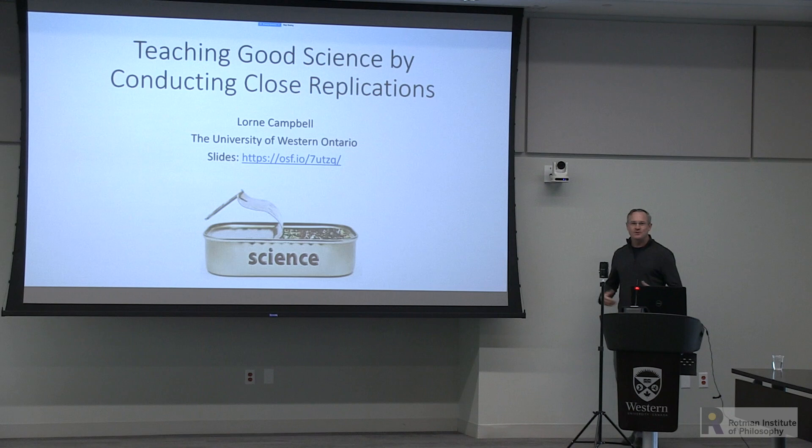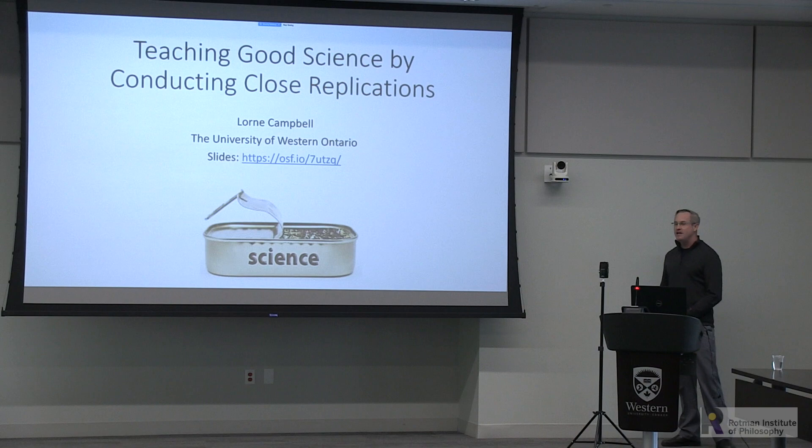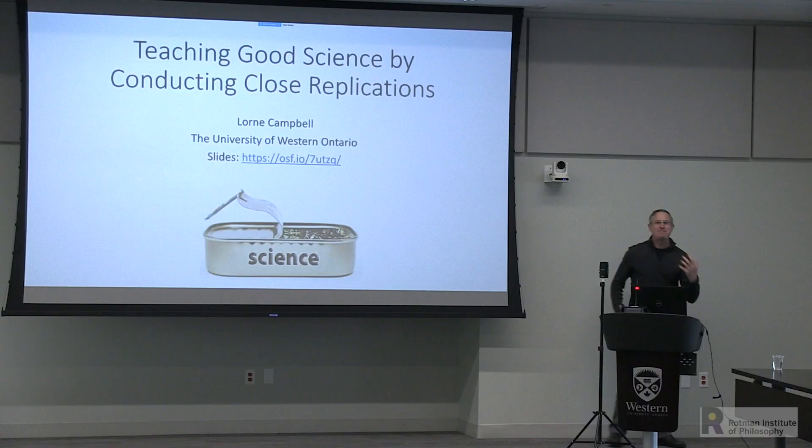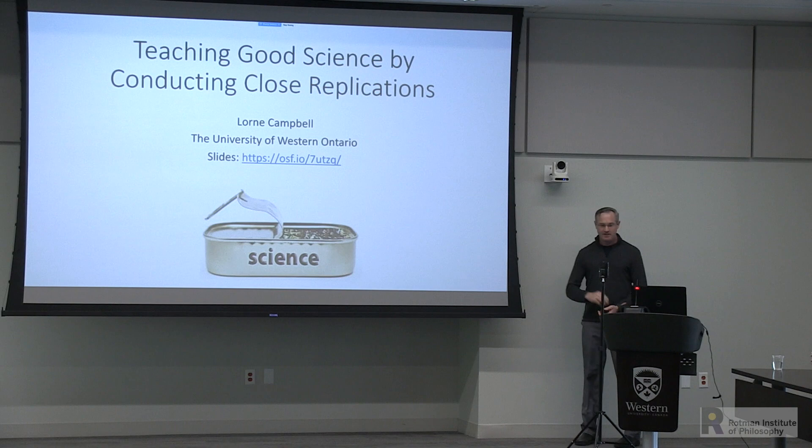As a fun anecdote: I'm a social psychologist studying relationship processes, and when I talk to colleagues about open and reproducible scientific practices, they'll say they don't really know what they're going to find. Yet whenever I read their papers, I always see 'as predicted.' How can you say you can't state in advance what you expect, yet every paper seems to predict things perfectly? Usually it's 'as predicted after I saw the data.'